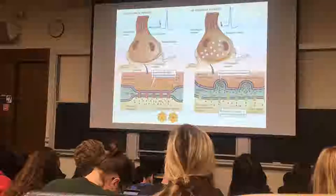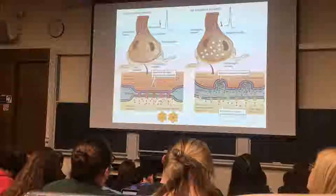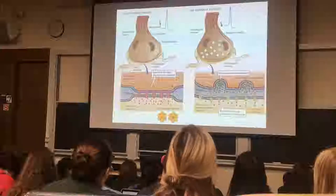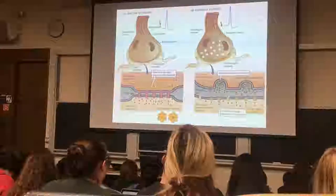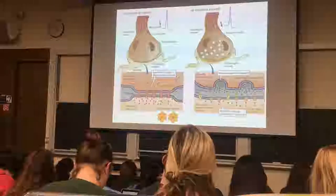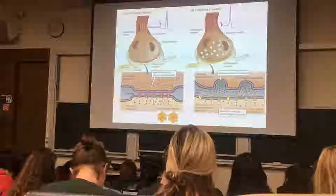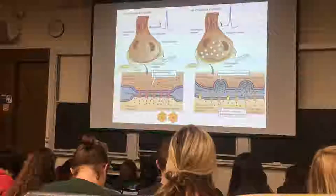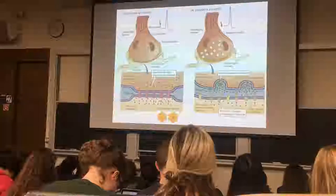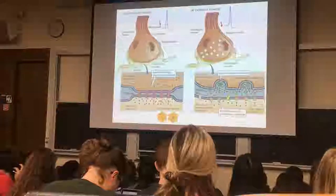There are basically two types of synaptic connections between nerve cells: one is electrical, one is chemical. Electrical synapses are relatively rare. Whereas in the nervous system, something like 99% of all synaptic connections, or maybe more, are chemical synapses. Electrical synapses are relatively few and far between, but they do exist.